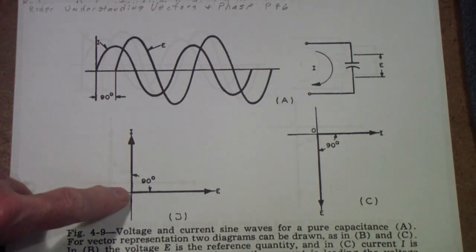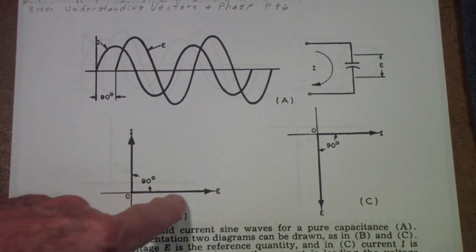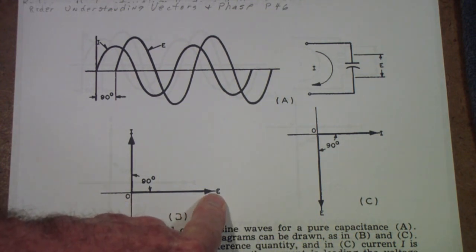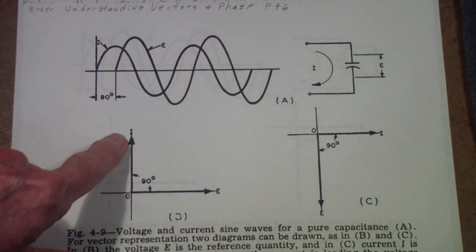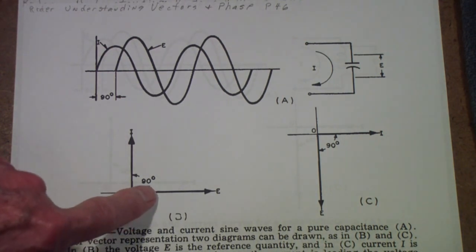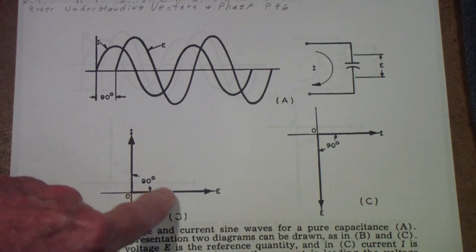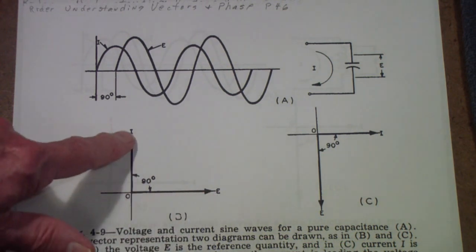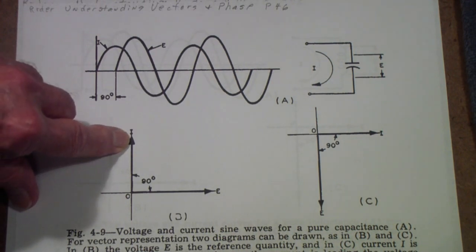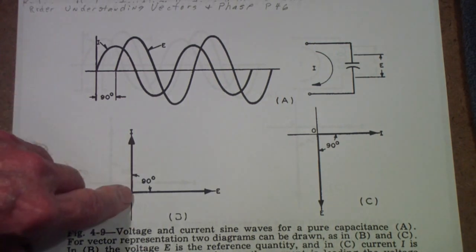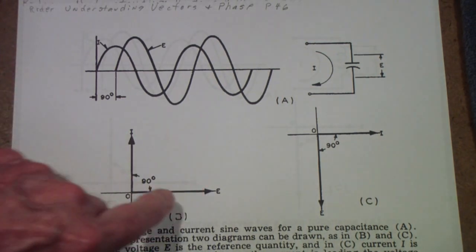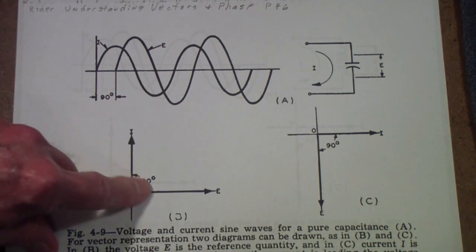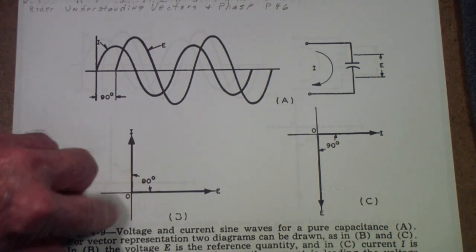But, if you draw the in-phase component, in this case the voltage, and the out-of-phase component, that is the current, the angle between these two is the 90 degrees. So, all you're really doing with these lines is the length of the line represents the magnitude. So, this is the magnitude of the current. And this is the magnitude of the voltage.